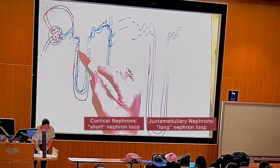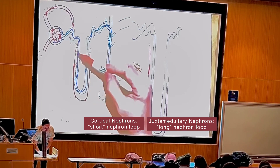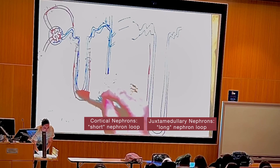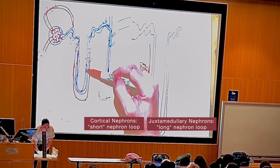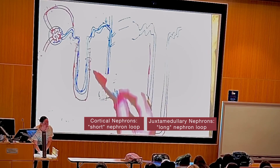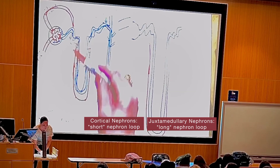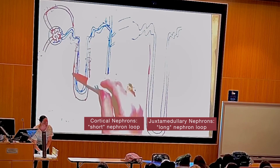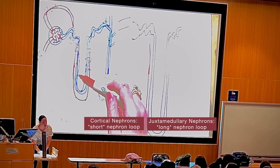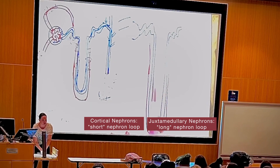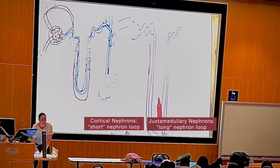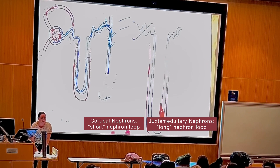In the loop of Henle, water leaks out going down, and sodium and chloride are pumped out going up — concentrating the urine. Which nephron concentrates urine more — the short or the long? The long one, the one with the vasa recta. That is the juxtamedullary nephron.